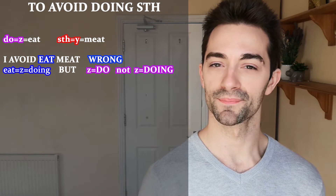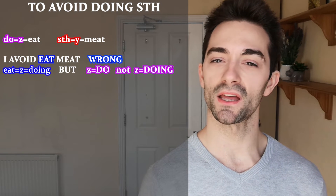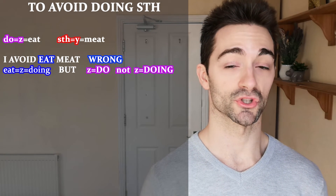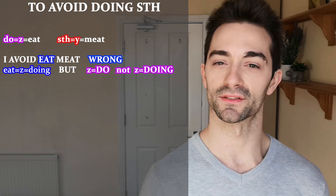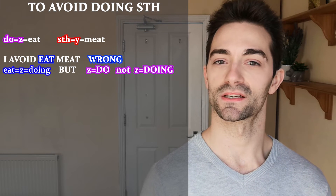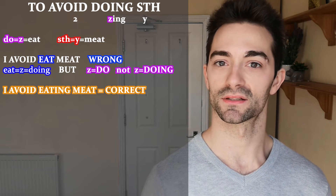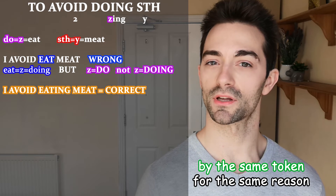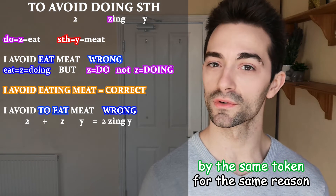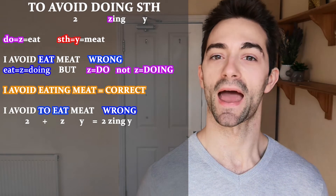In the structure 'to avoid doing something', with eat for z and meat for y, most of my students will say 'I avoid eat meat'. Why is that wrong? If you say 'I avoid eat meat', you are telling me that eat equals doing. But we know that z only equals do. So if we analyse the original structure mathematically, we don't get 'z y', we get 'z-ing y', where z only represents do. So the correct version is 'I avoid eating meat'. By the same token, if you say 'I avoid to eat meat', this is also incorrect because you are adding a 'to' which equals plus, which is not the same as the original formula.